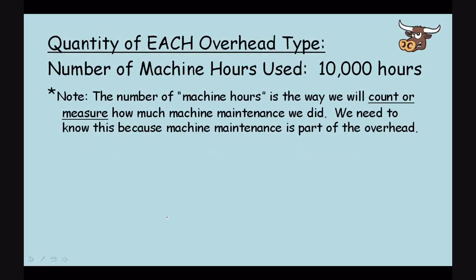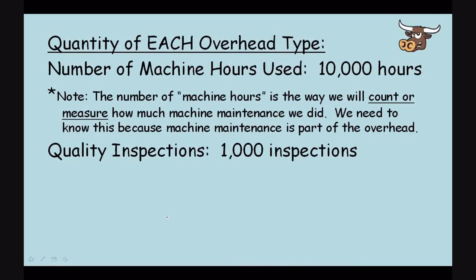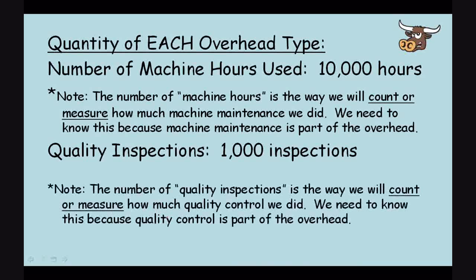For the other overhead cost of quality control, let's measure it by the number of inspections. Other accountants might have other ways of measuring how much quality control was done, but for our example, this company measures quality control by counting the number of inspections done by the quality control officers. Let's say it's 1,000 inspections. This is all given information.